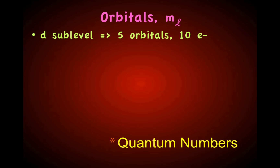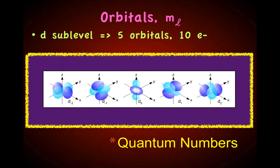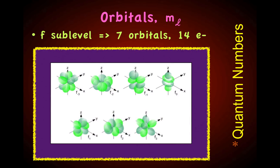A D sublevel has five orbitals, which means ten electrons can be in any D sublevel — five different orientations. An F sublevel has seven orbitals: seven orbitals times two equals 14 total electrons in any F sublevel, with seven different orientations in which the orbital is directed in space.